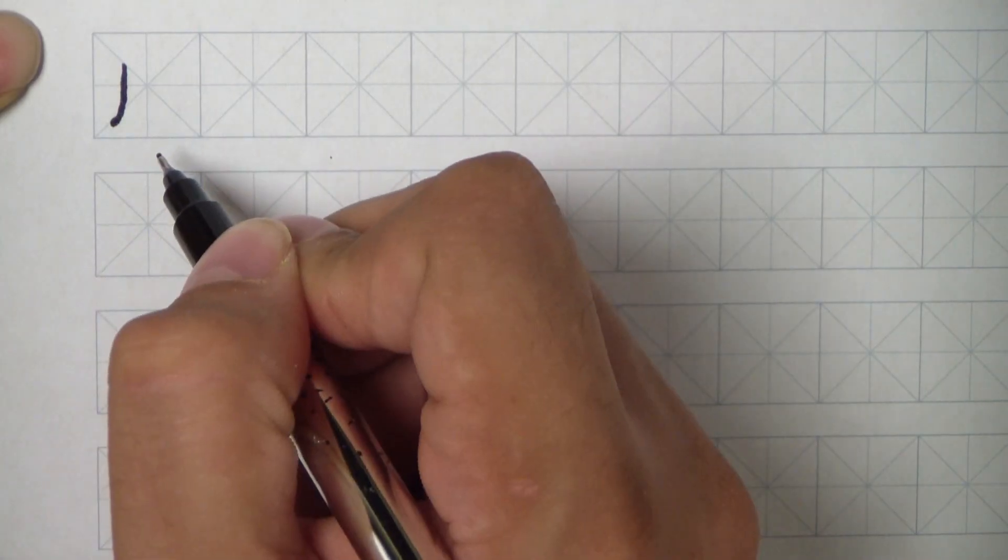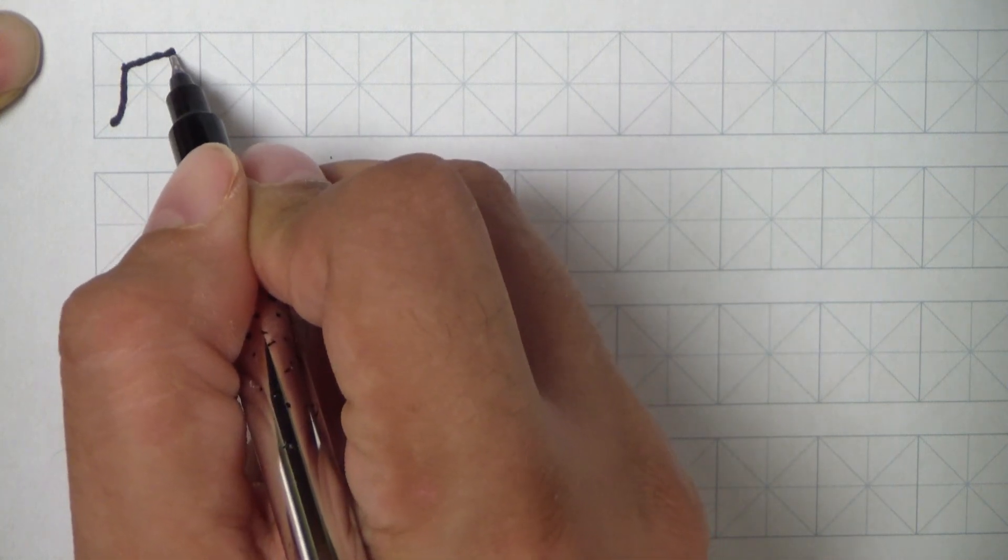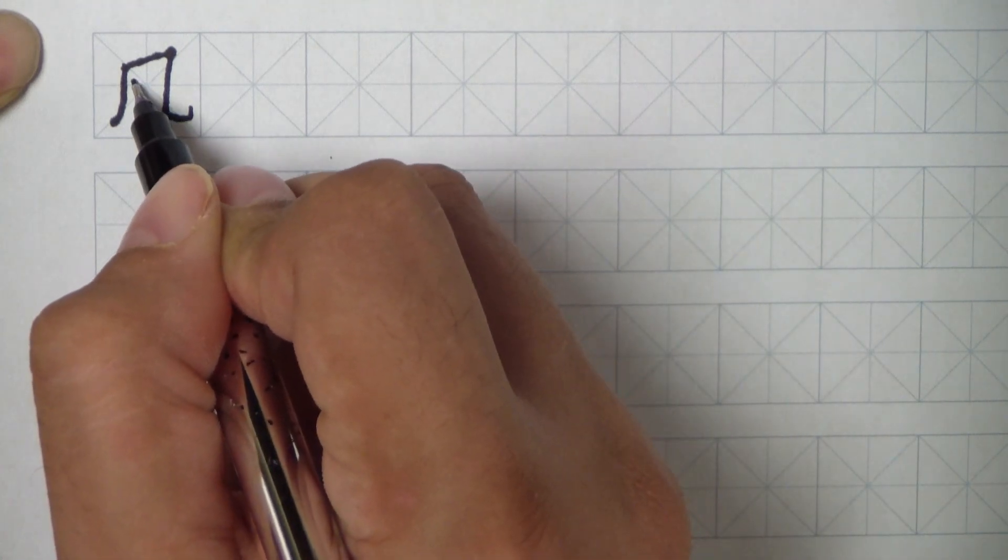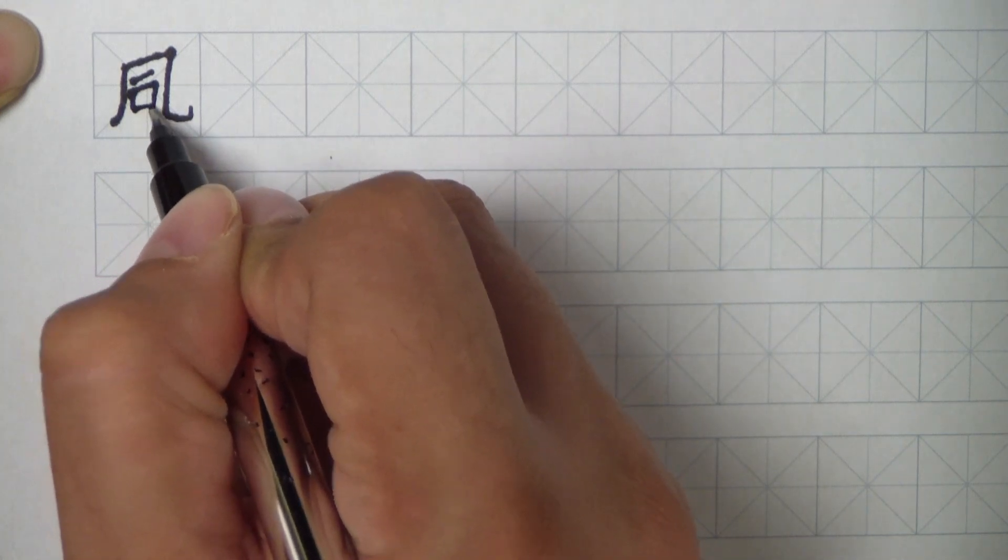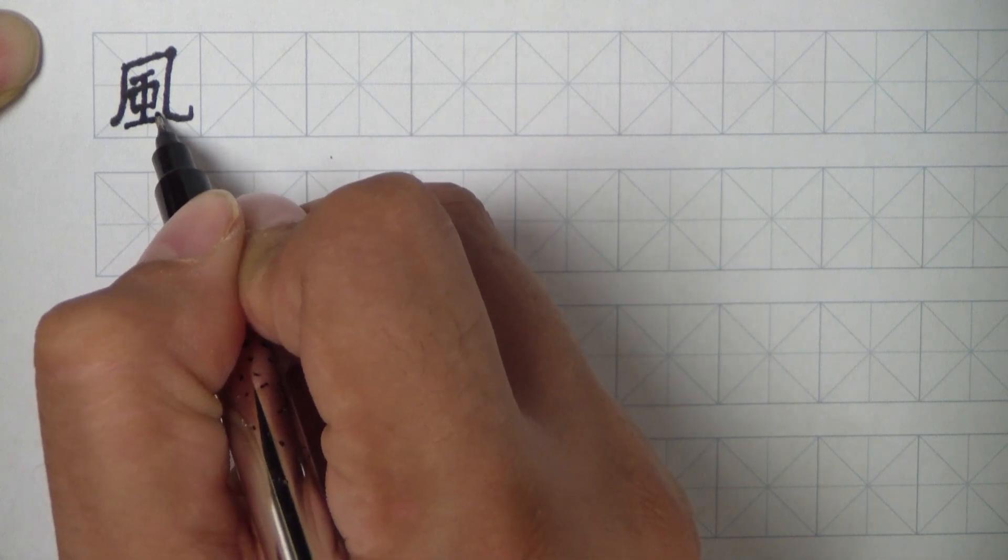You start here and come down, then go back up and then come up and then come down and then curve a little bit at the end. Then we're going to make one stroke and make a box here. One, two, three, four, five, six.